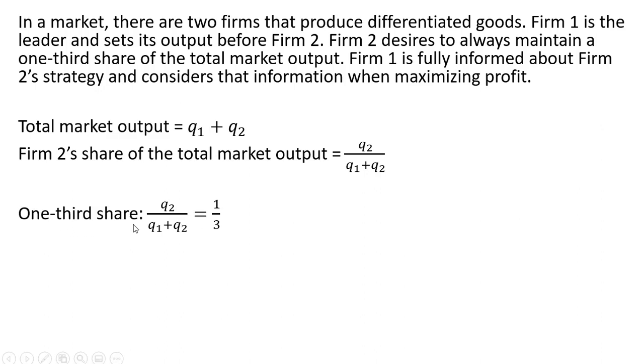So one-third share for firm two, we're going to set this equation equal to one-third and solve this for q subscript two, firm two's output. If you solve this equation for q subscript two, you'd get that firm two's output will equal one-half firm one's output. And this will always maintain a one-third market share for firm two.